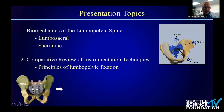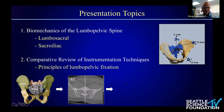The first principle involves the anatomic zones of fixation available in the lumbopelvic region, and the remaining three are a springboard from those anatomic zones — zone one, zone two, zone three. The second principle is the variability in bone mineral density in the sacroiliac region, particularly as we transition from the S1 to the S2 level.